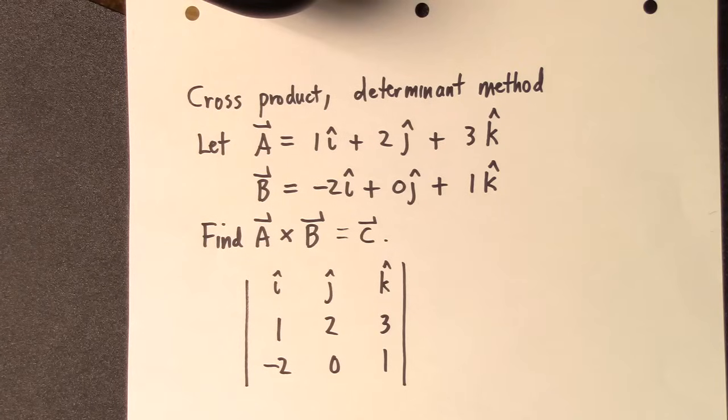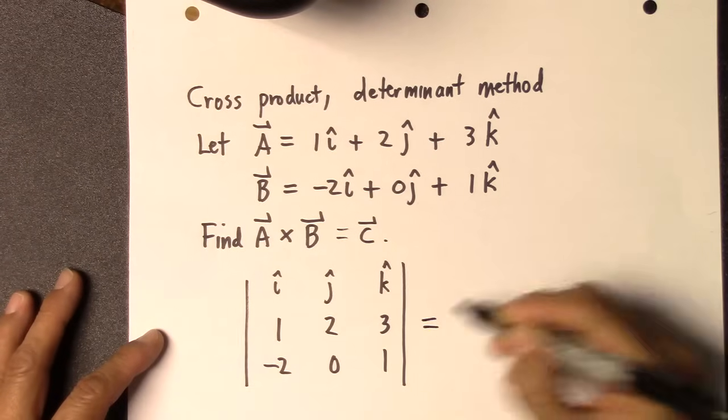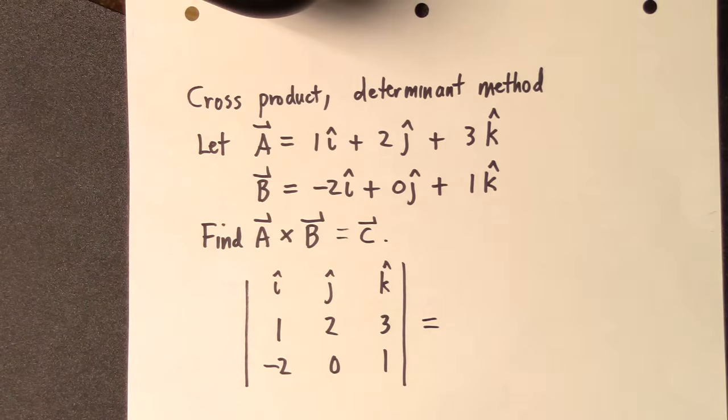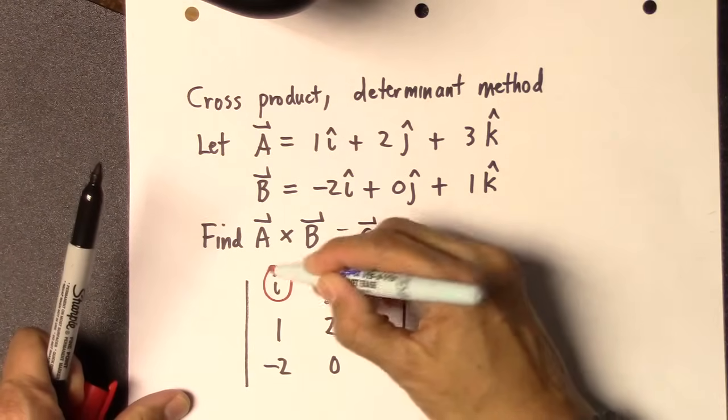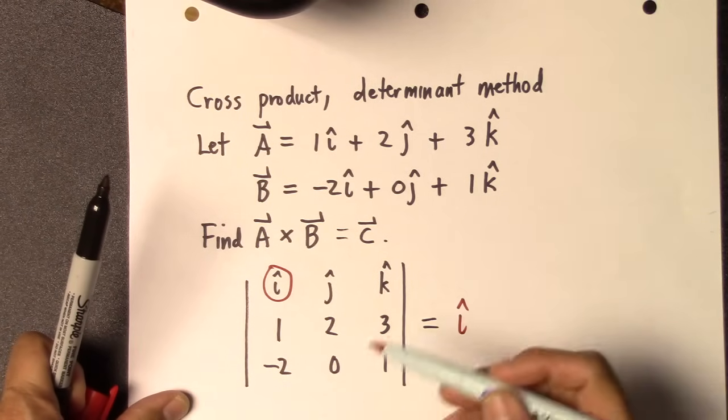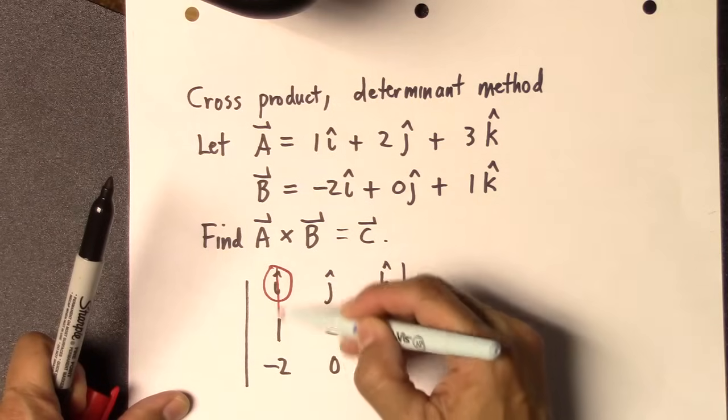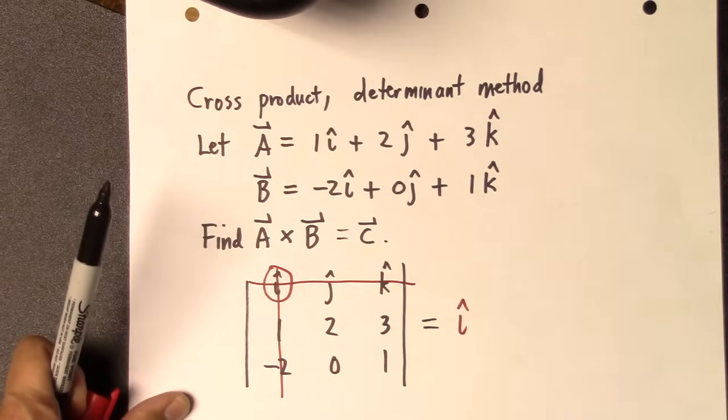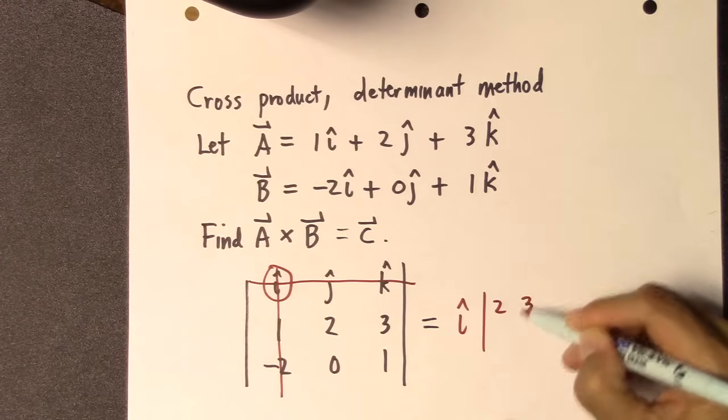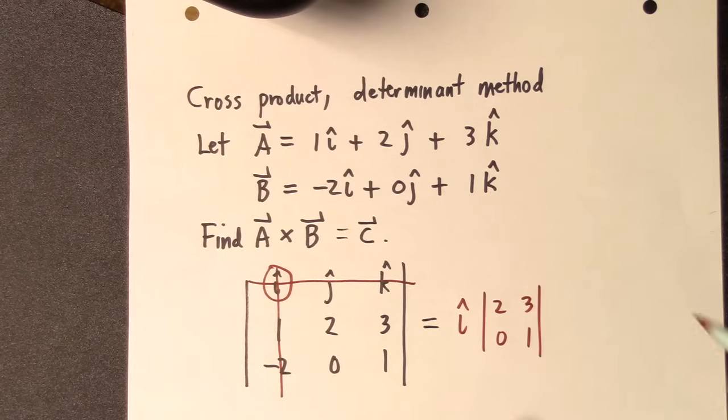So what you have to do is take the first row, and you're going to focus on the i hat over here. And write i hat, and then you're going to cross out the column and row containing the i hat, like this. And that leaves you with a 2x2 matrix, and I'll just draw the matrix like this. After you get good at it, you don't have to write all this stuff out.